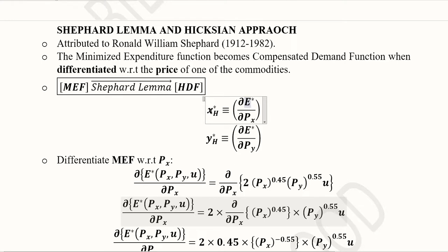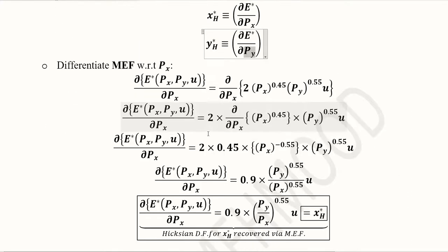So, this will give us the Hicksian demand function for x. For Hicksian demand function of y, we can differentiate it, that is the minimized expenditure function with respect to its own price that is py. So, now let's do this one by one.